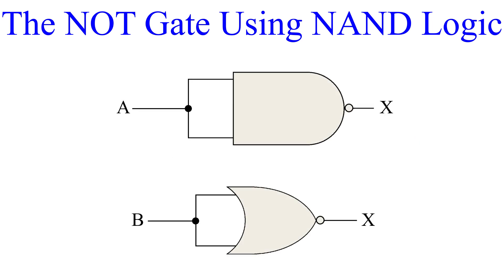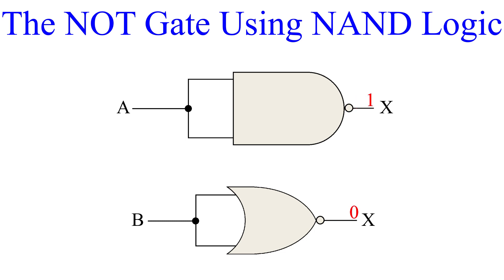Take a second look at both of these setups and follow the logic for yourself. For inputs A and B, the inputs are always the same: 00 or 11. Whether AND or OR, the output would be the same as the input. Since these are actually NAND and NOR gates, the output is negated. So for an input of 0, we get an output of 1, and for an input of 1, we get an output of 0.